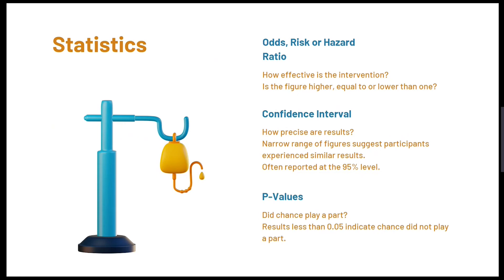A p-value indicates how likely results would have occurred due to chance and not the effectiveness of the intervention. If the p-value is less than 0.05, this indicates the results are not due to chance and therefore are statistically significant. Results which are equal to or more than 0.05 indicate chance played a part and the results are not statistically significant.